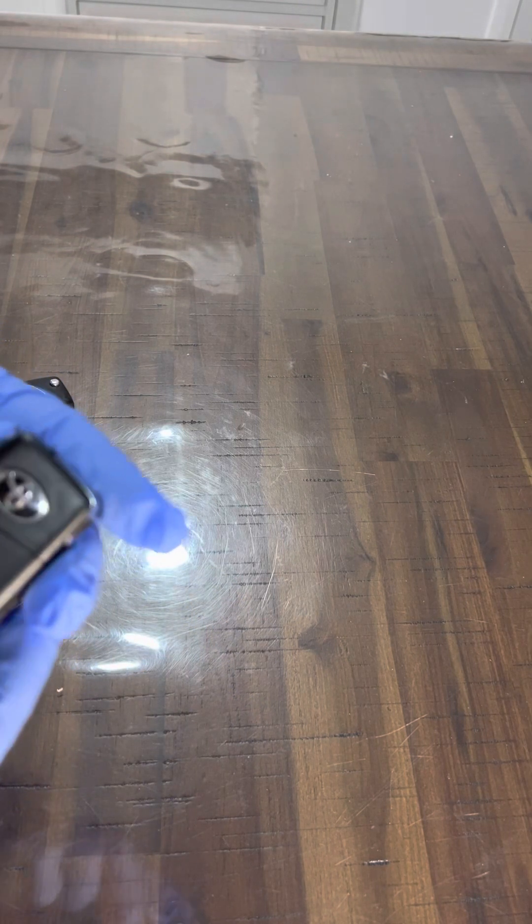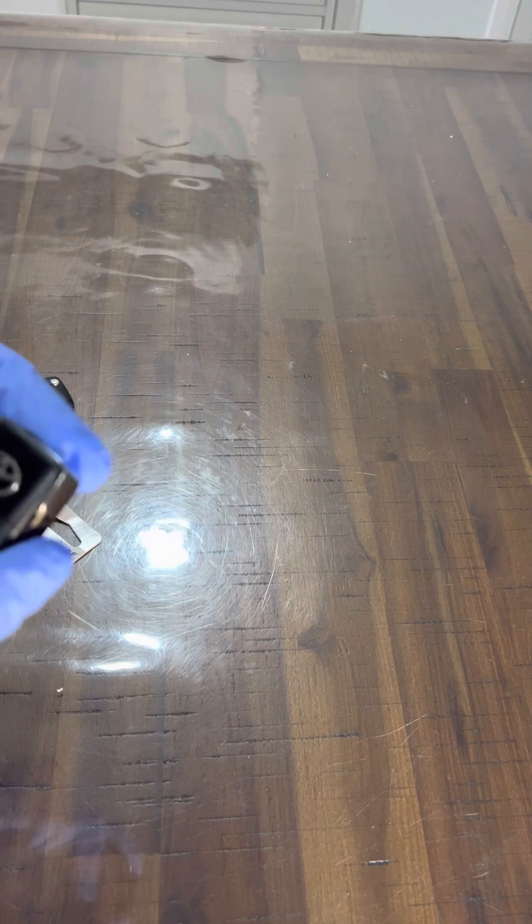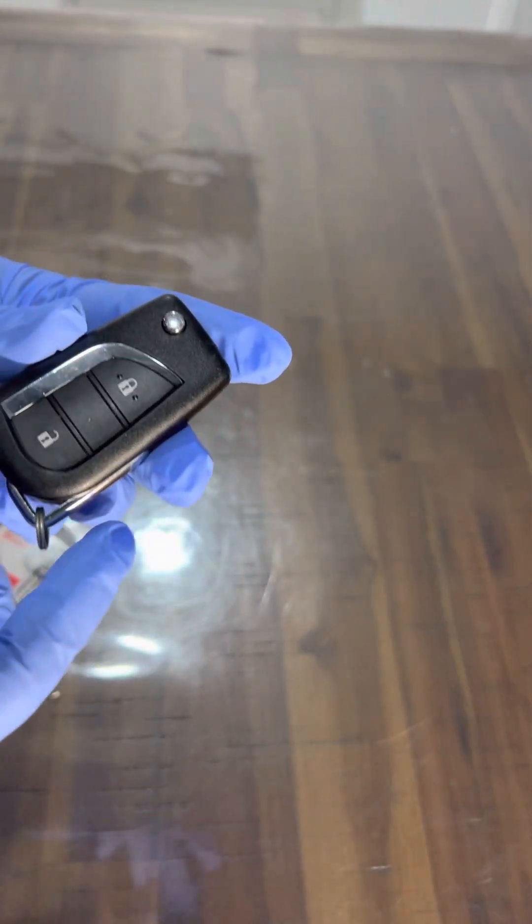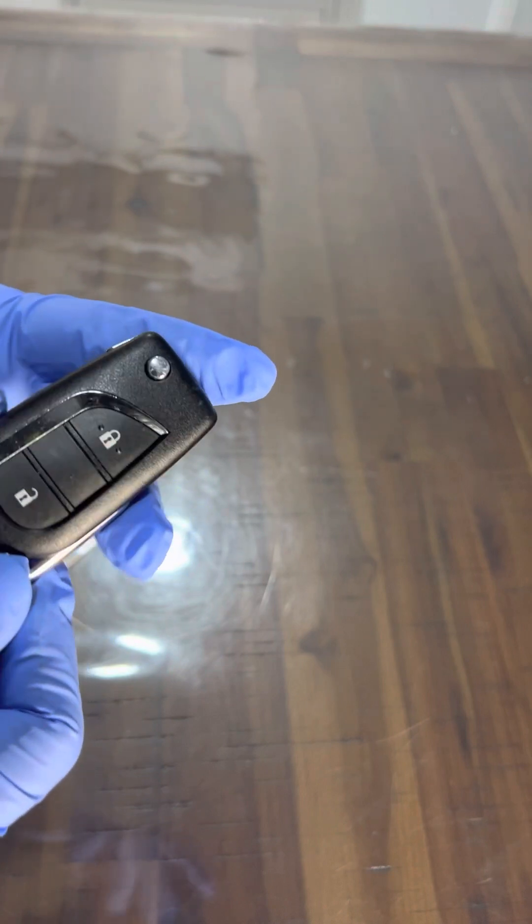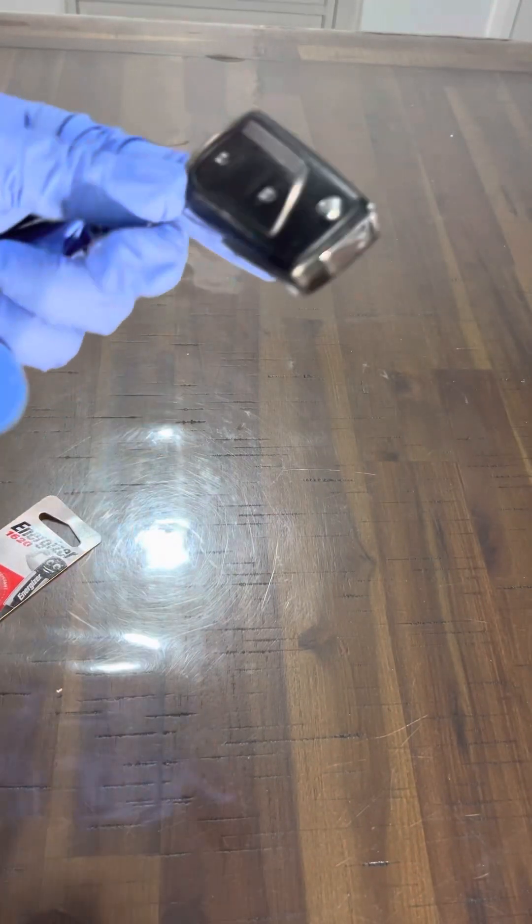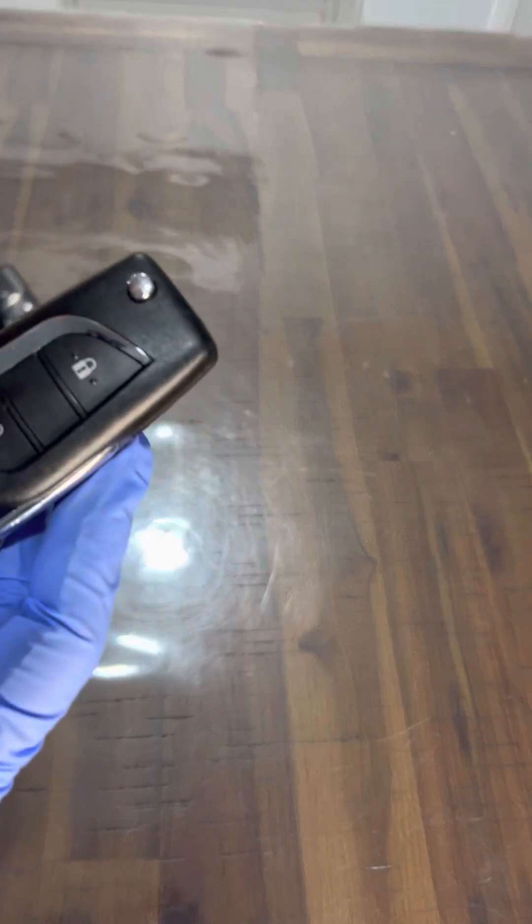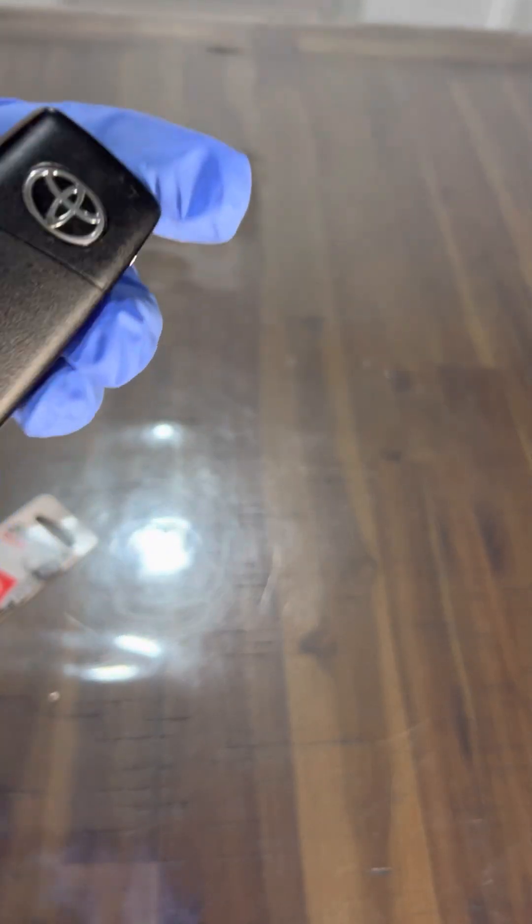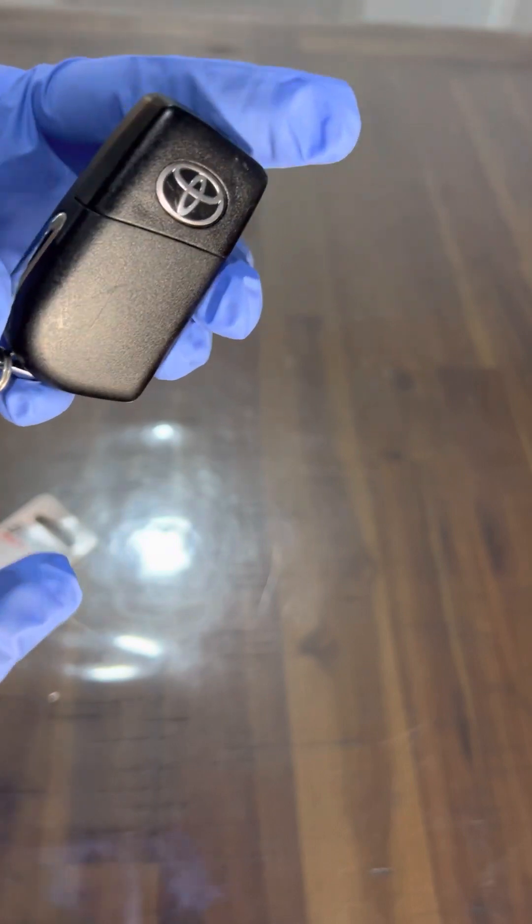So I've got a Toyota Corolla key remote. This is my car key remote. The other one is working, and then the spare key, the unused one, stops working. So it seems to be a battery issue.